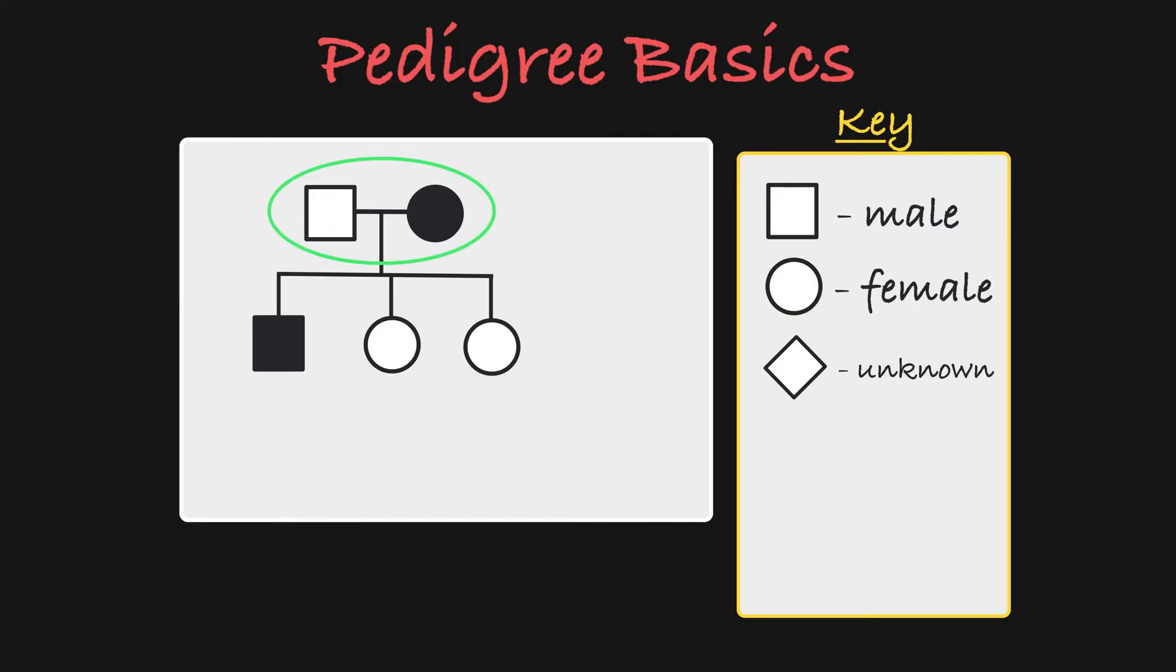Here we can see two biological parents connected by a mating line. From their mating line, you see a line of descent that leads to a sibship line. The sibship line connects all of these parents' offspring. The children of these parents are listed in order of their birth from left to right. So these parents had three children, a son followed by two daughters.